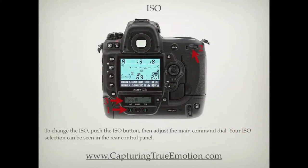To change the ISO, push the ISO button, then adjust the main command dial. Your ISO selection can be seen in the rear control panel.